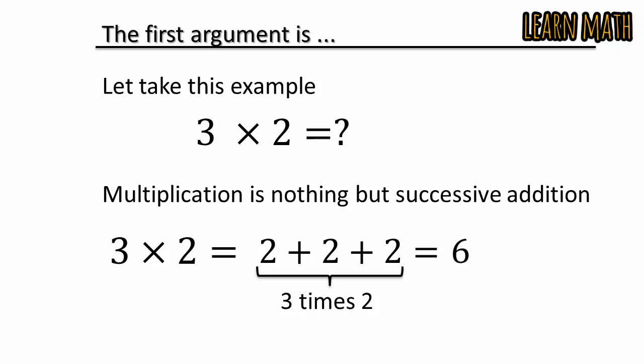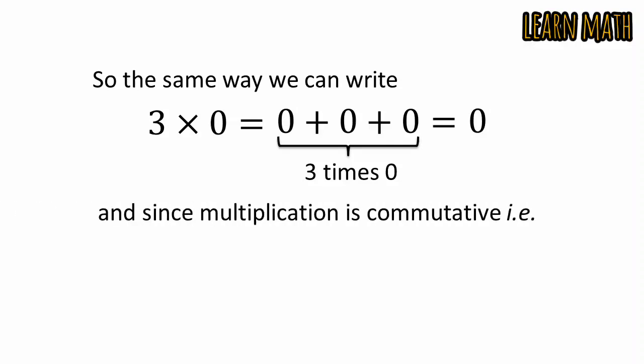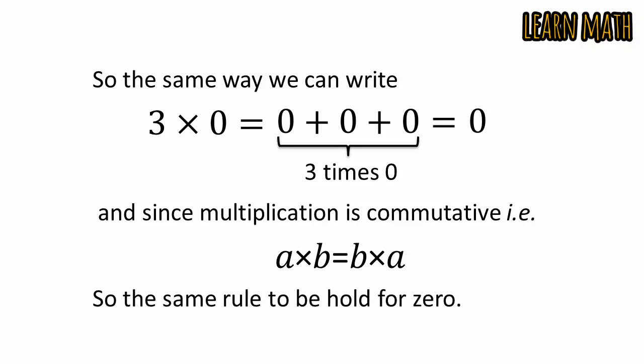In the same way, we can write 3 × 0 = 0 + 0 + 0, meaning 3 times 0, which equals 0. Since multiplication is commutative for all real numbers and complex numbers, the same rule must hold for 0. So any number multiplied by 0 equals 0, or 0 multiplied by any number is 0.